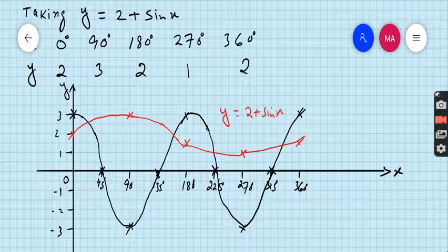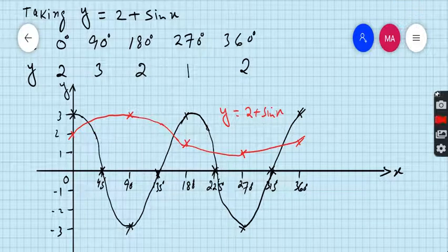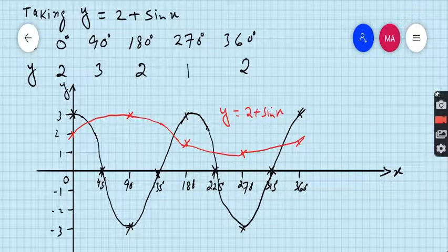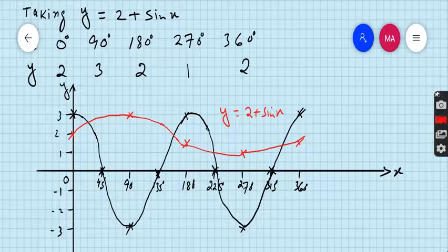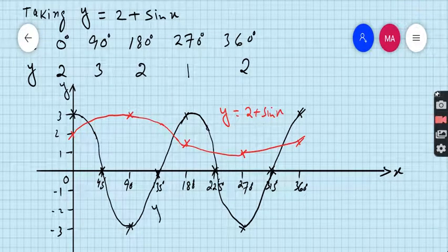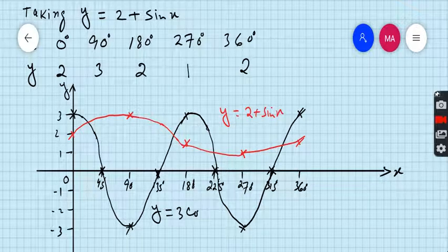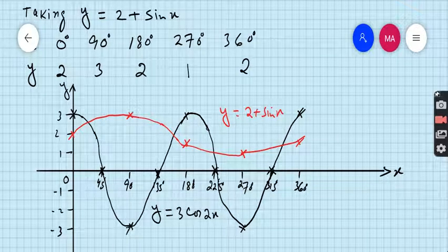x is 0, y is 2, x is 90, y is 3, x is 180, y is 2, x is 270, y is 1, x is 360, y is 2. And the black one is the equation of y equals 3cos2x.